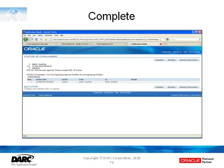Now we're seeing the completion notification — really the request for work to be completed. Here, if you remember, we see our custom message: it says 'ECO M1-1048 has been approved, please complete the MEI actions.' Notice that now it doesn't say reject or approve in the buttons, but it just has the option of 'complete.' So this is the notification I get as a manufacturing engineer that there's an ECO out there that I need to take some action on. I'll go take the action on it and then come back when I've completed that work and just tell the workflow that this task has been completed.